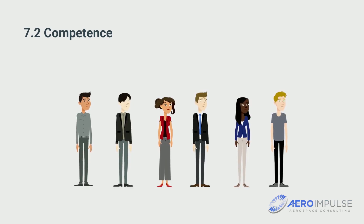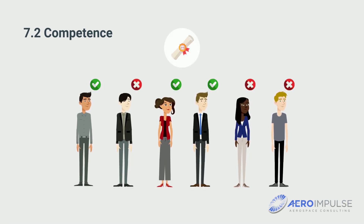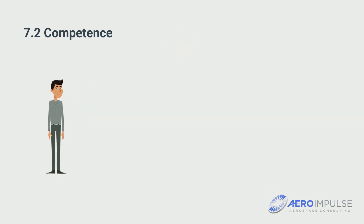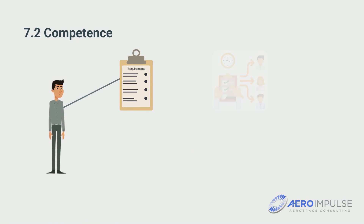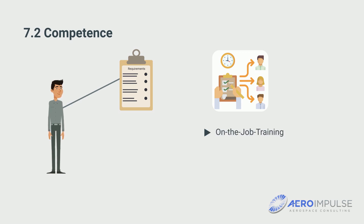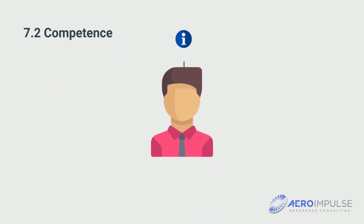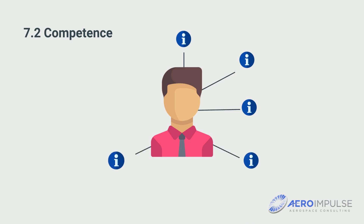Plenty of staff is of little use if they are not sufficiently qualified. The first step is to determine what an employee must be able to do in his or her role. Qualification and induction plans that include on-the-job training, specialized training, and instruction are expected here. This must then be compared with the actual competence of the employee. If gaps appear, the employee must be qualified.